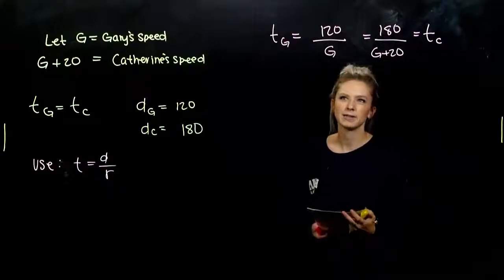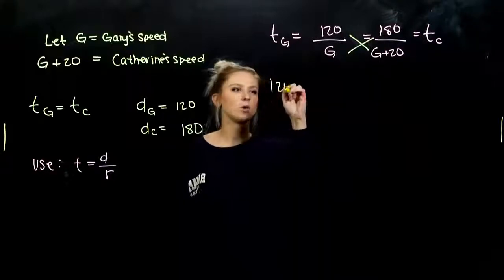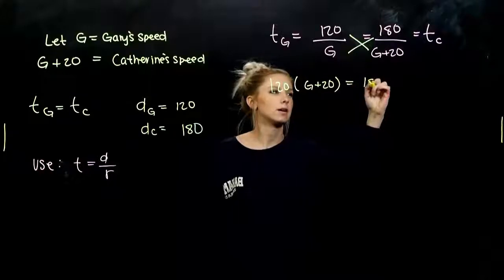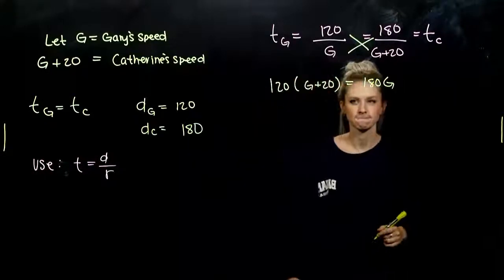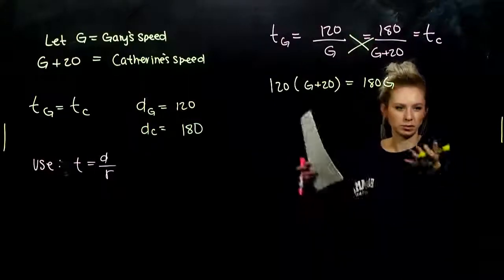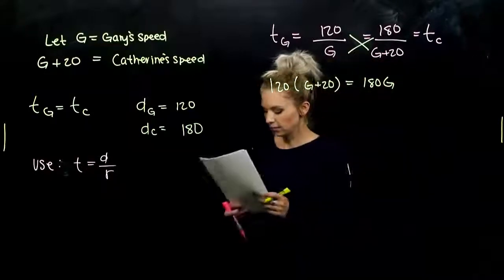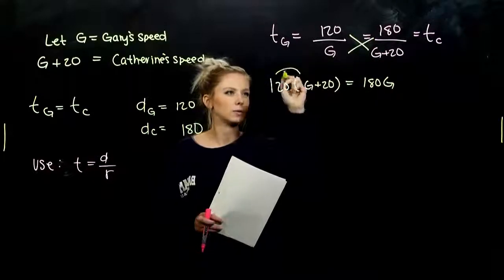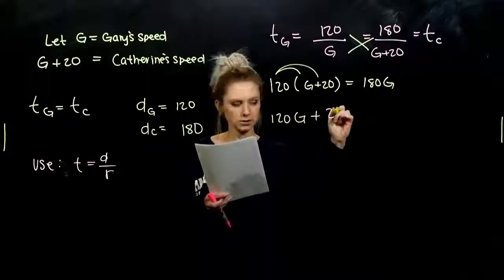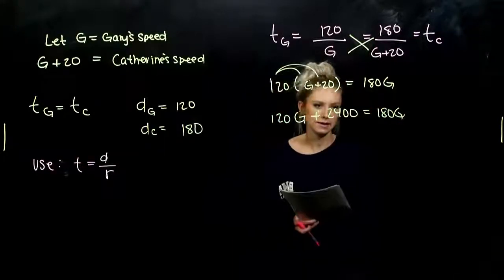So again, we can multiply by the LCD. Since I have proportions, we can cross multiply. So I'm looking at 120 times G plus 20 is 180 G. So when we're solving for Gary's speed, then we can plug it back in and solve for Catherine's. And we need to start distributing to get rid of parentheses. So what are we looking at? So I've got 120 G plus 2,400 gives me 180 G.